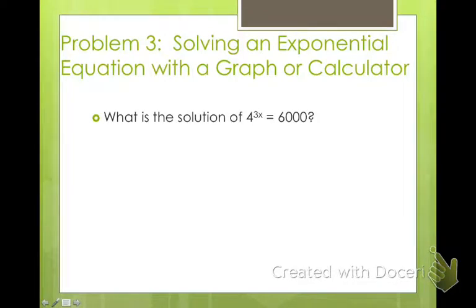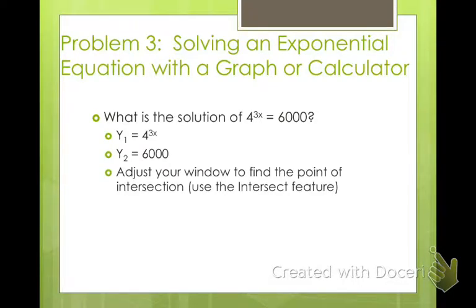Alright, you can also solve these using a graph or a calculator. I'm just going to show you one way. This is going to be the easiest way to solve it. So what's the solution of 4 to the 3x equals 6,000? Well, we don't have a common base for this one, so we can't rewrite it. So what you can do is take and put one half of your equation, 4 to the 3x, in your y1. Put the other one, y2 equals 6,000 into your calculator. Okay, and then go ahead and graph both of those. But you're going to have to change your window because obviously 6,000 is going to be a point that's way up on your graph.